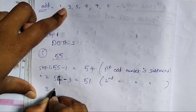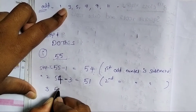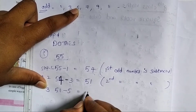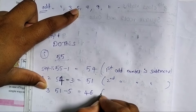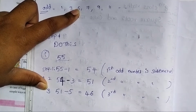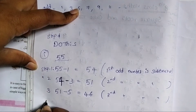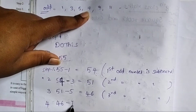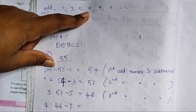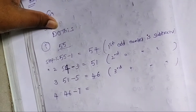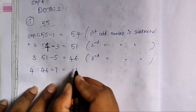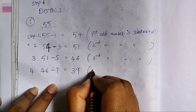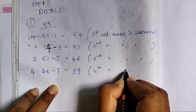Step 3: third odd number 5 is subtracted. 51 minus 5 equals 46. Third odd number is subtracted. Step 4: fourth odd number 7 is subtracted. 46 minus 7 equals 39. Fourth odd number is subtracted.